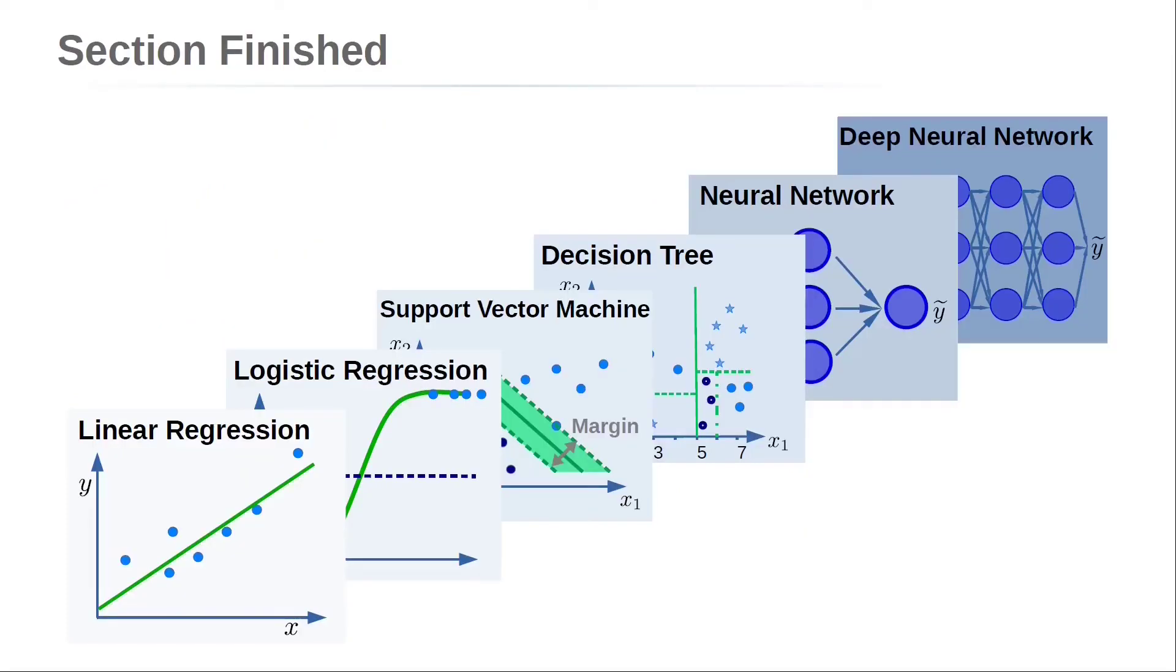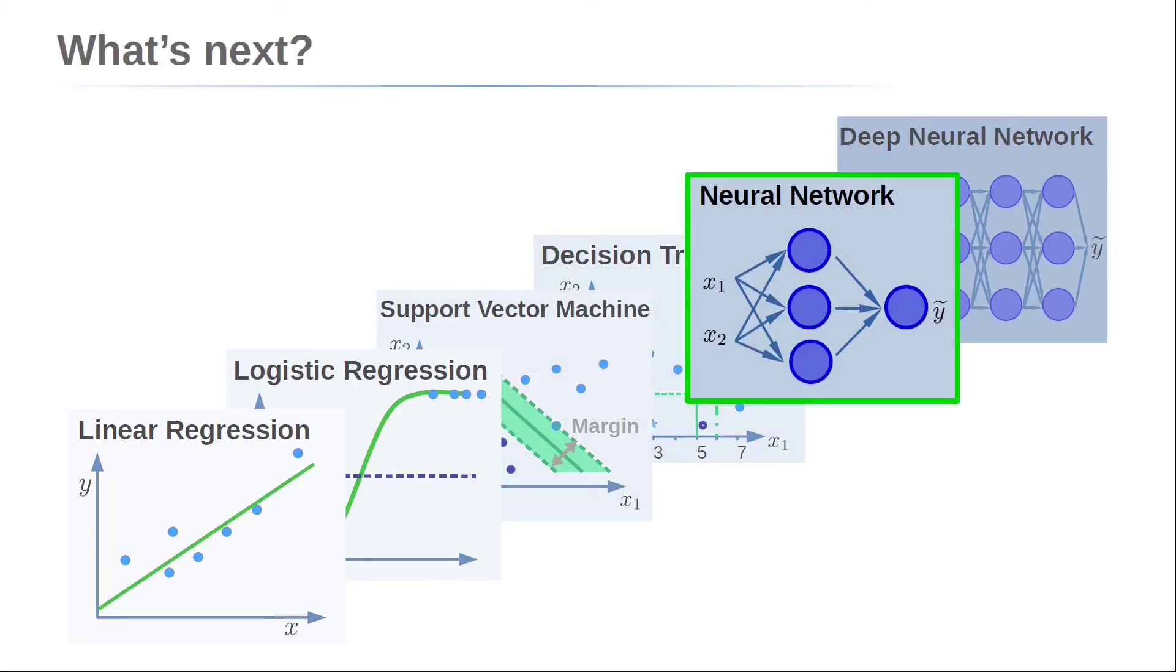In this lecture we considered the decision tree algorithm. The idea is to divide the input space into regions of a specific class. The splits are chosen by a local optimization strategy. The local cost function uses a Gini impurity to evaluate the separation quality of the split. Finally, we learned about the hyperparameters to control when to stop splitting. In the next lecture we will consider neural networks.